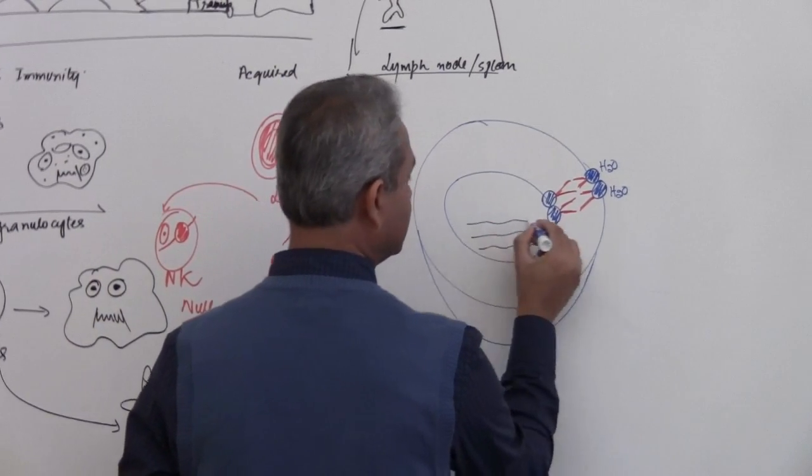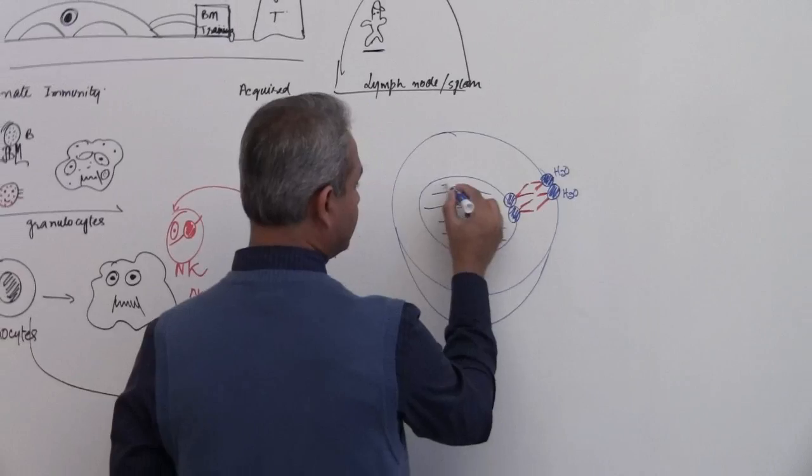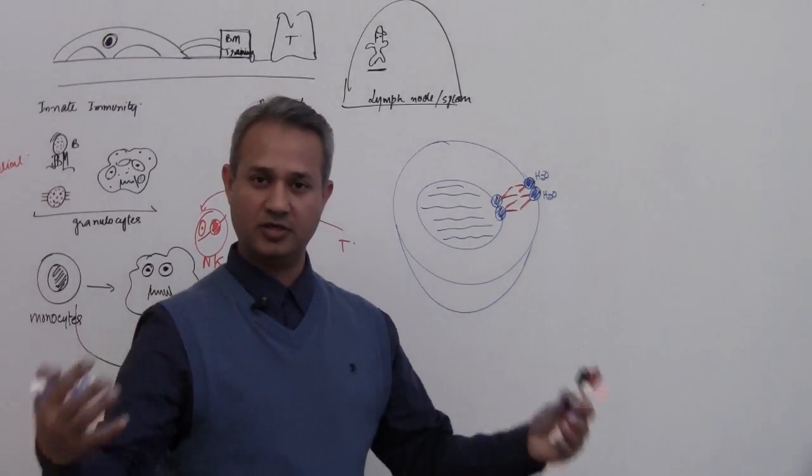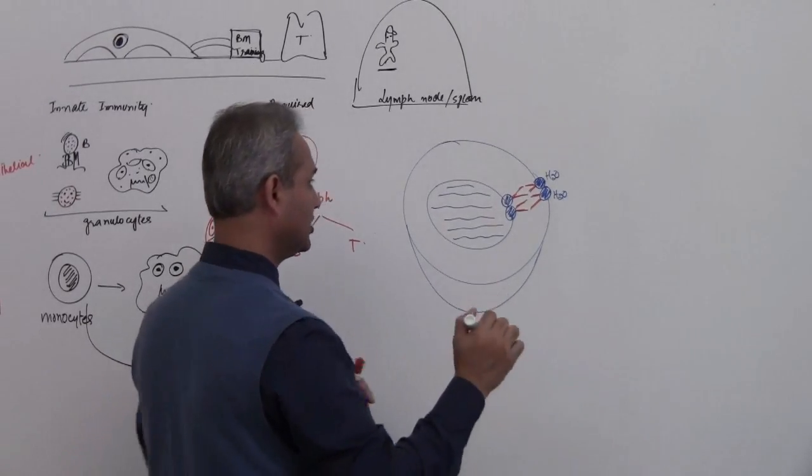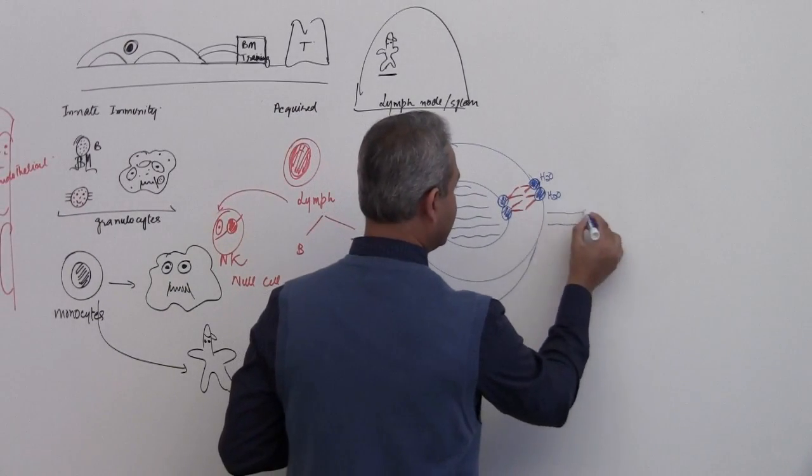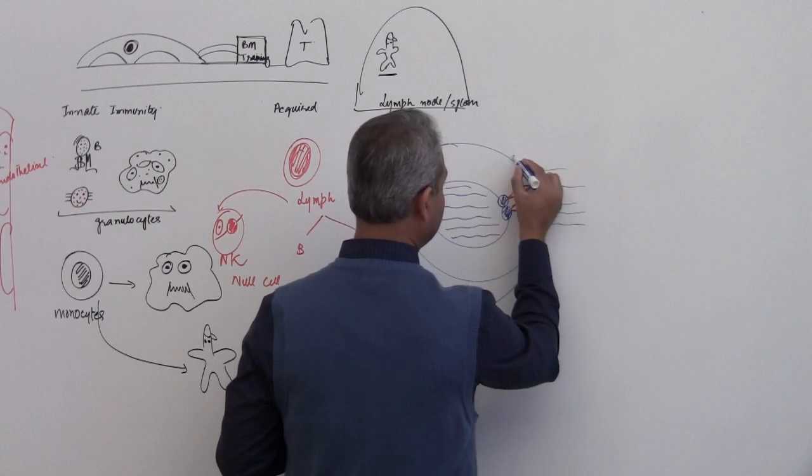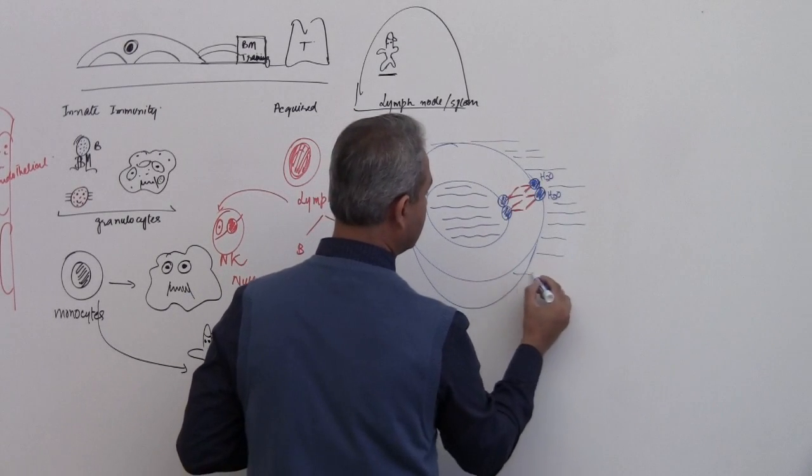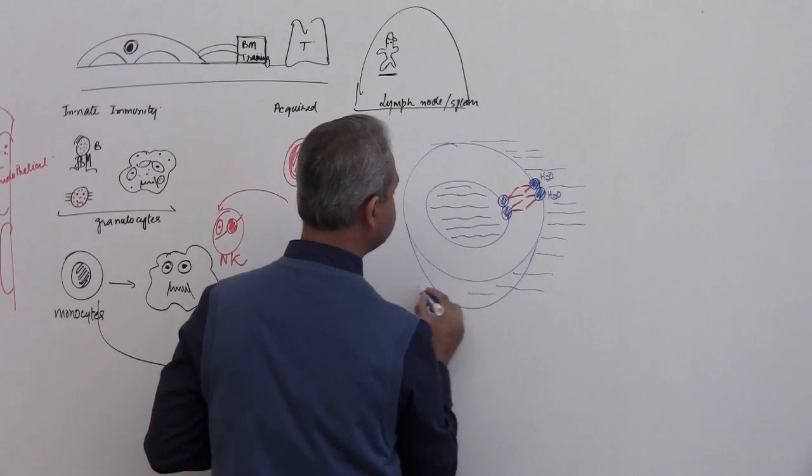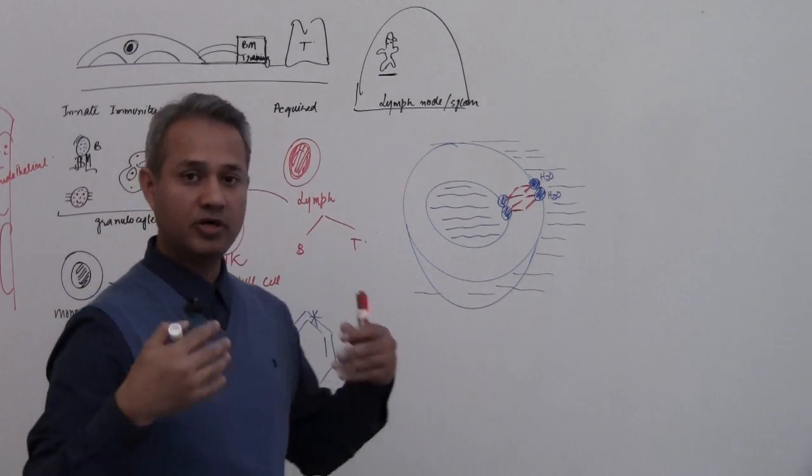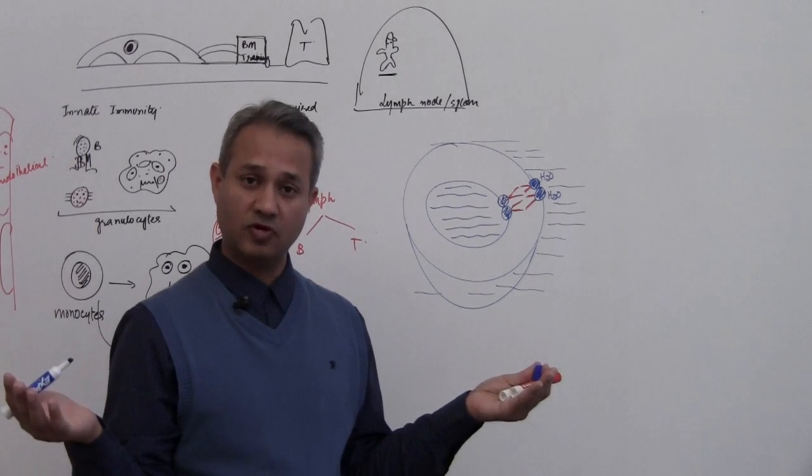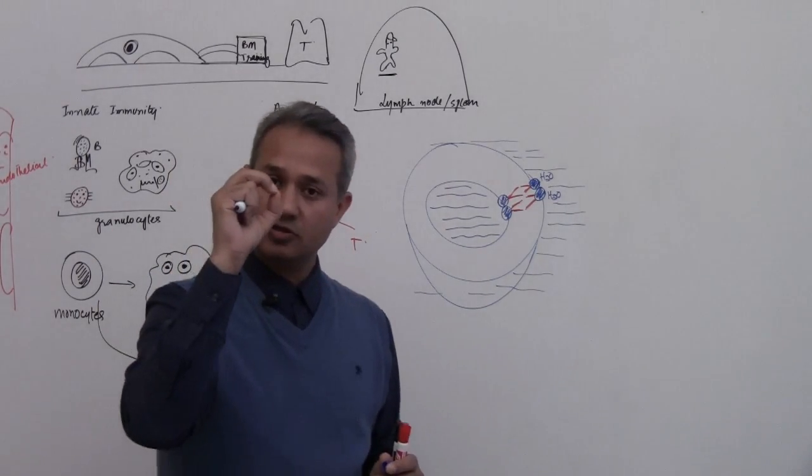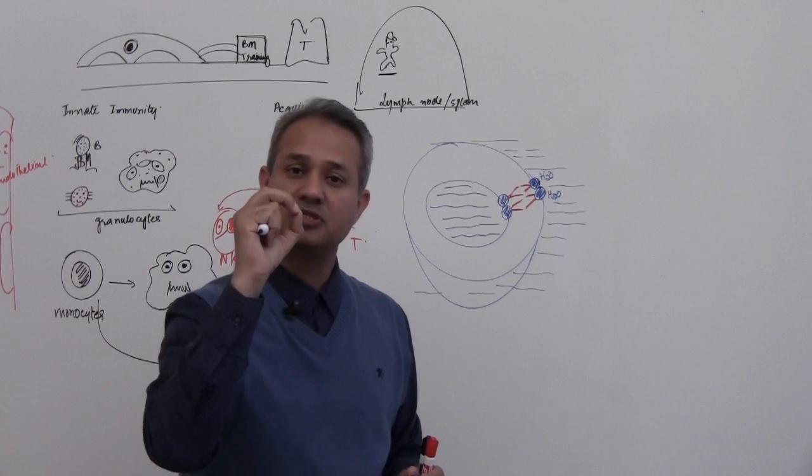So let us say water is here. This is cytoplasm. Somewhere inside the cytoplasm are cellular organelles, there is nucleus, there are other things. I am not making them, I am trying to make a point here. And similarly, outside the cell is water as well, right? So it is a big ocean.